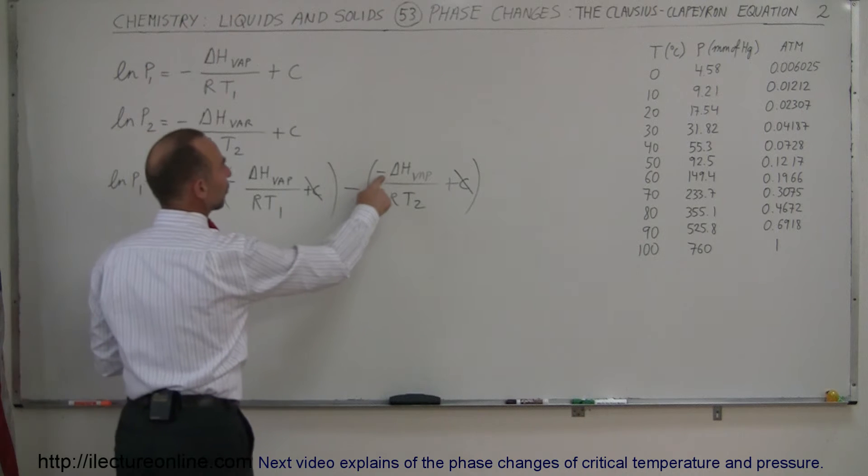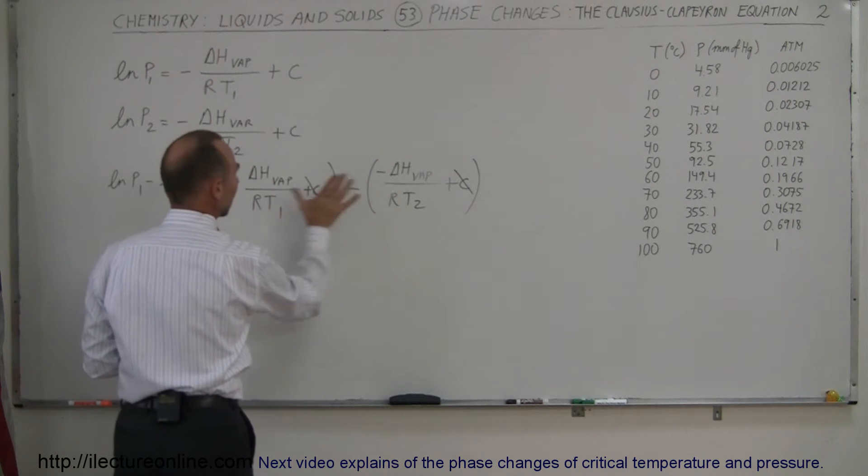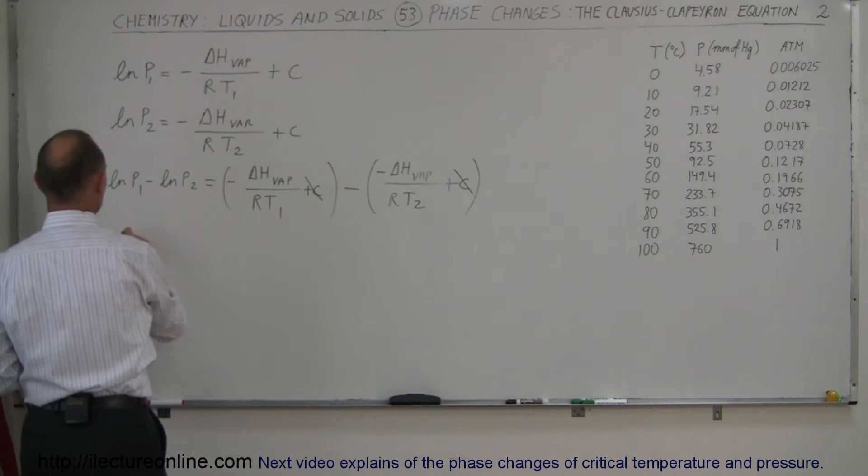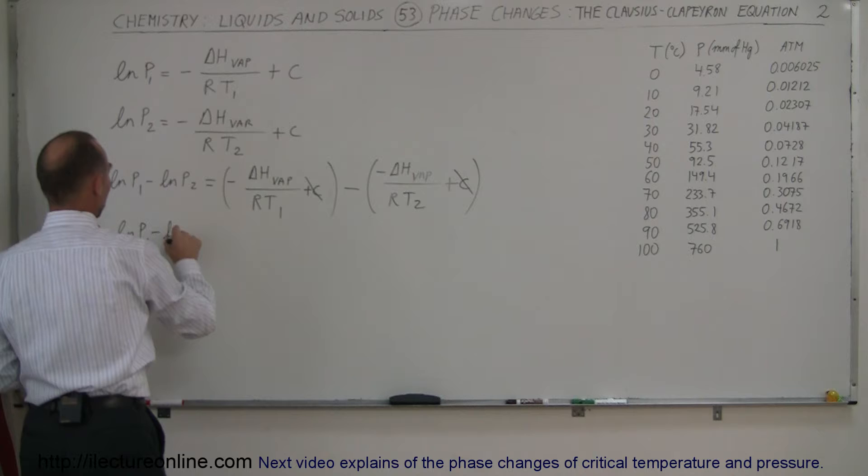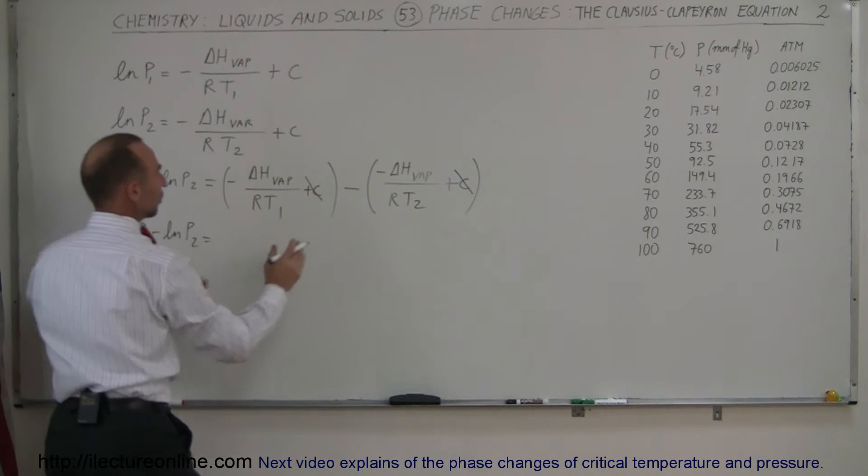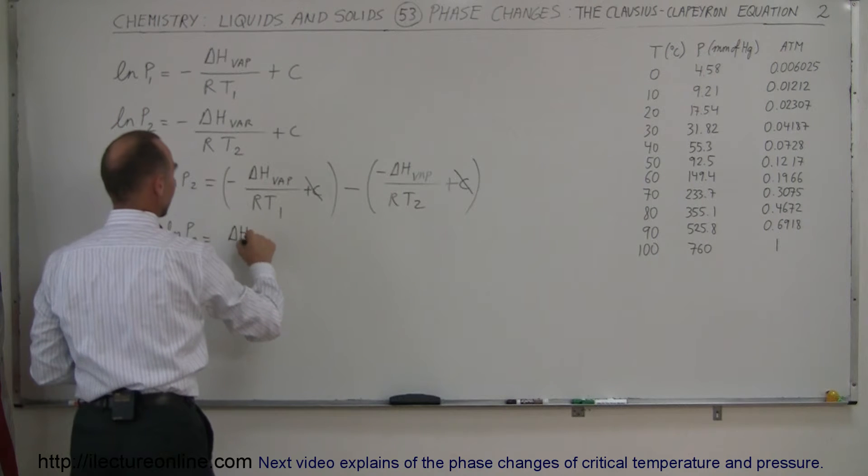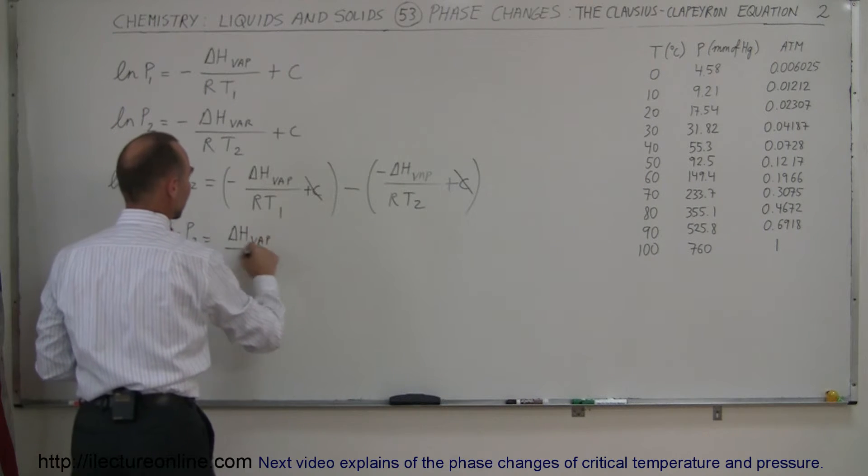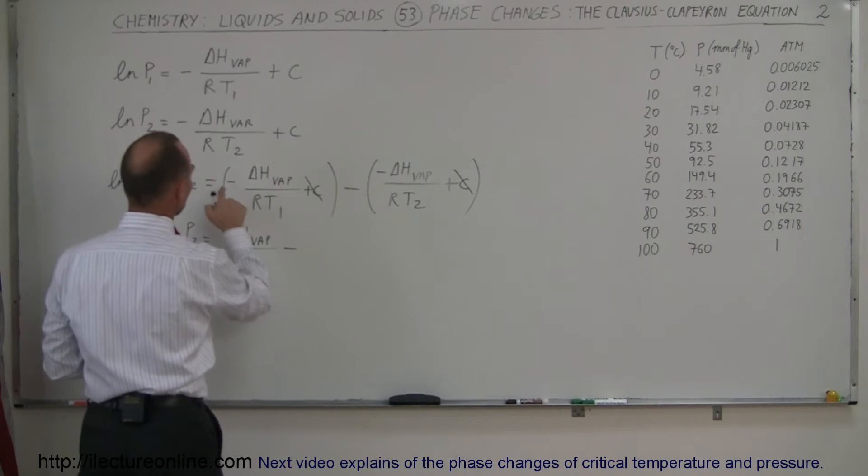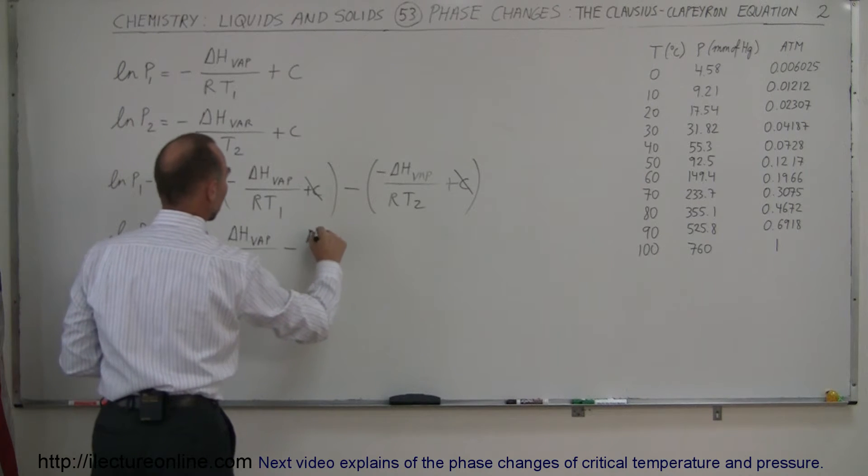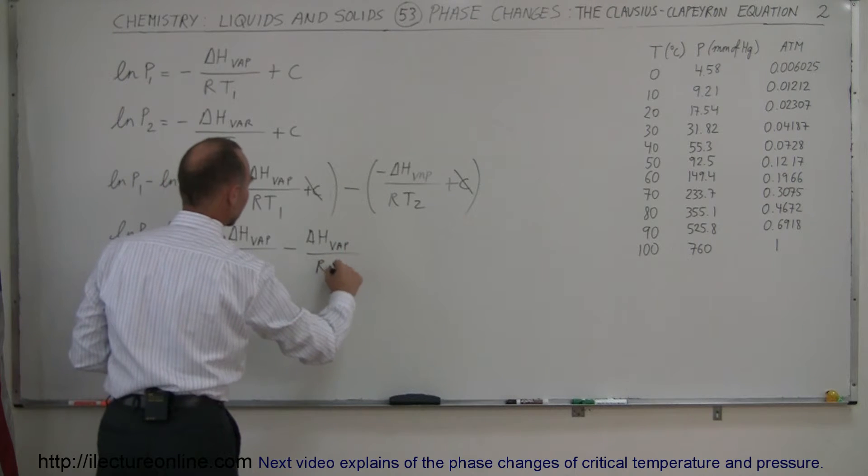Since this negative turns this negative into a positive, I can rearrange. The natural log of P1 minus the natural log of P2 equals, this negative times this negative makes this a positive. So we have delta H of vaporization divided by R times T2, and then minus delta H of vaporization divided by R times T1.